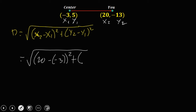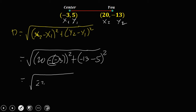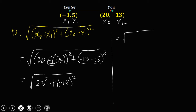Plus y₂, that's negative 13, minus y₁, that's 5, then squared. Simplifying: 20 minus negative 3 — the double negative gives a positive — so 20 plus 3 equals 23, squared. Then negative 13 minus 5 equals negative 18, squared. So we have the square root of 23 squared plus 18 squared, which is the square root of 529 plus 324.